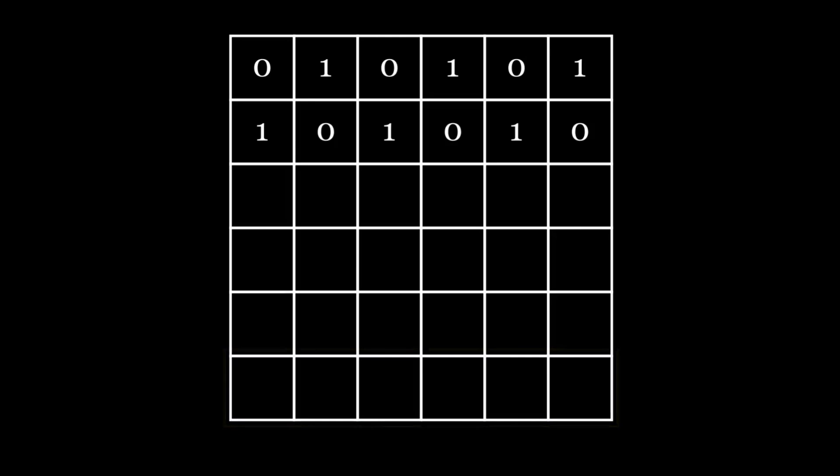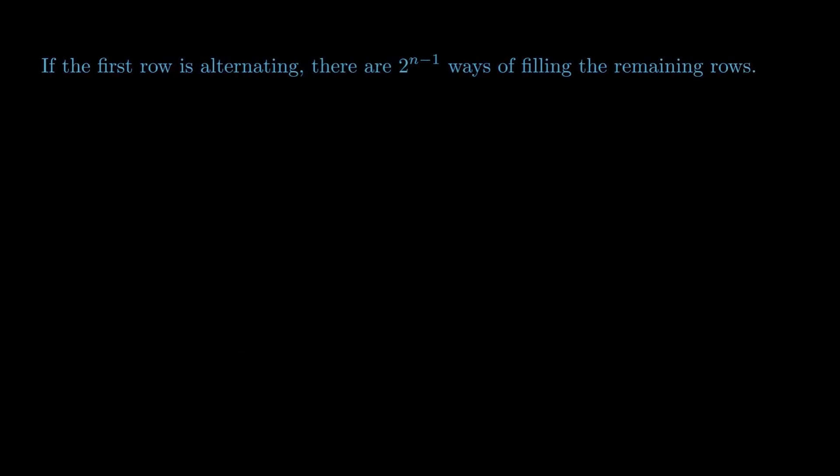Hence, if the first row is alternating, there are 2 raised to the power n minus 1 ways of filling the remaining rows. There are two ways to make the first row alternating. You either fill it with 0, 1, 0, 1, and so on, or 1, 0, 1, 0, and so on.